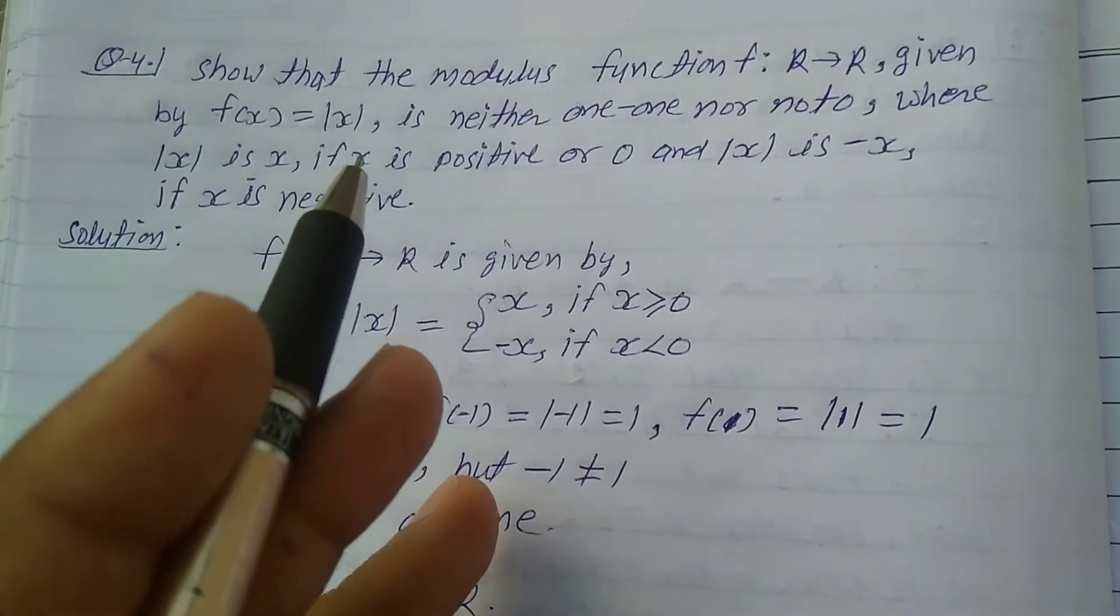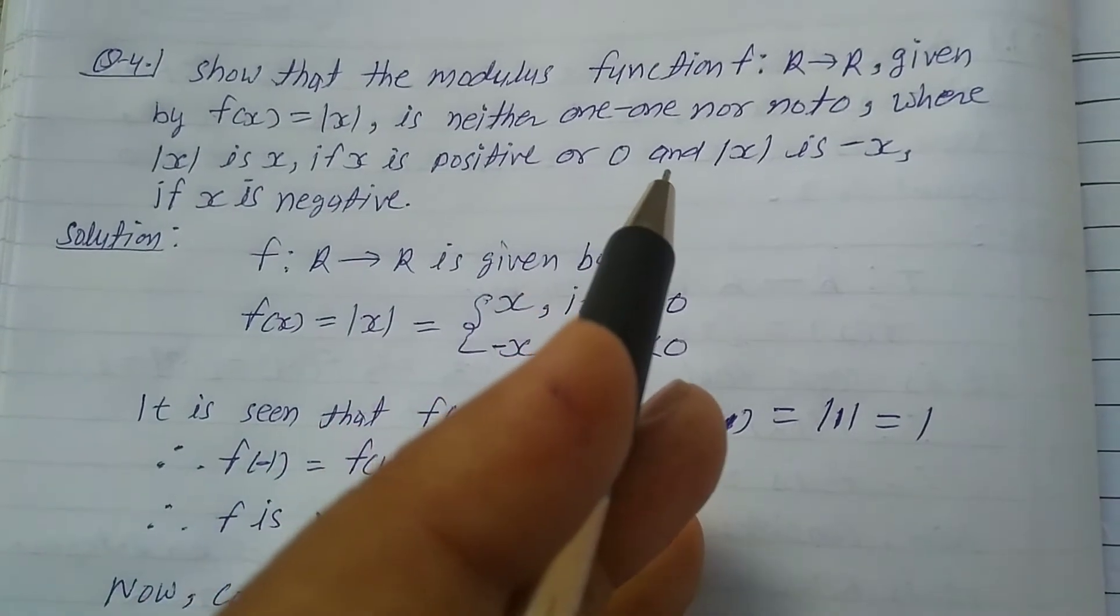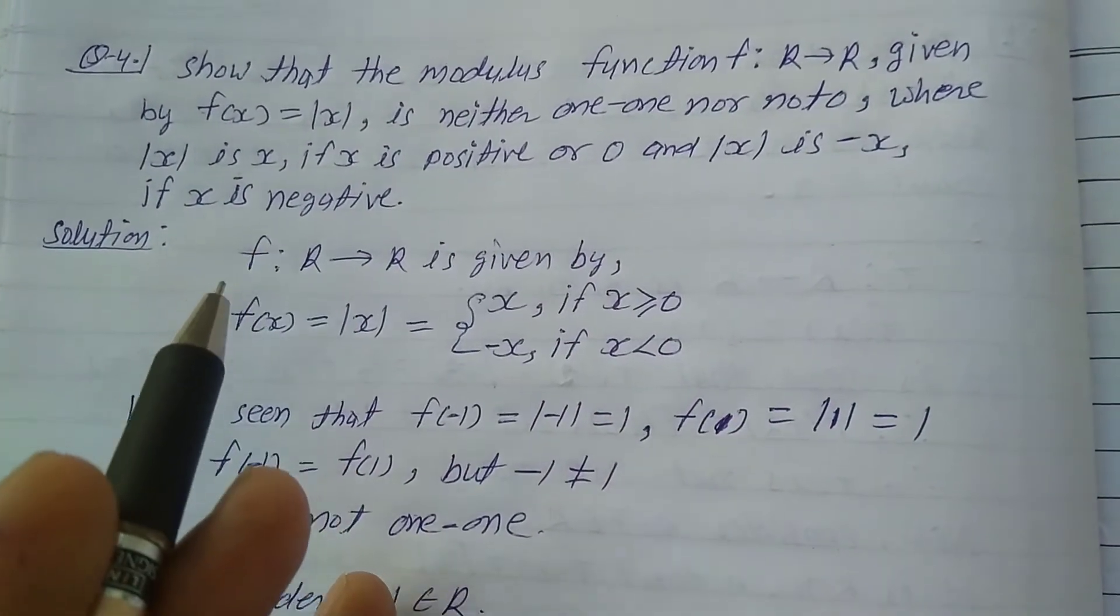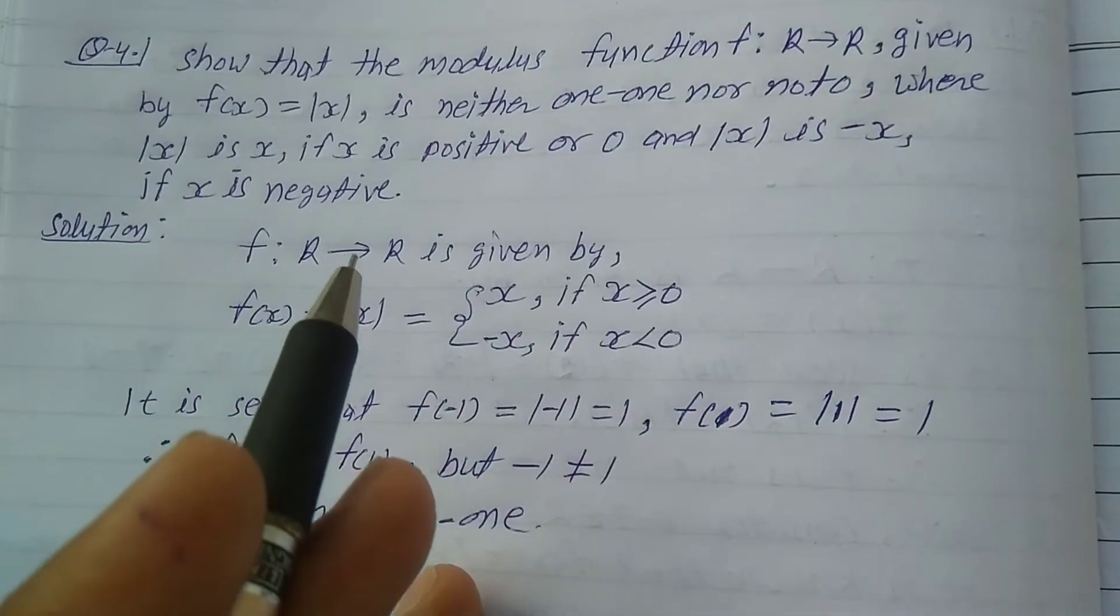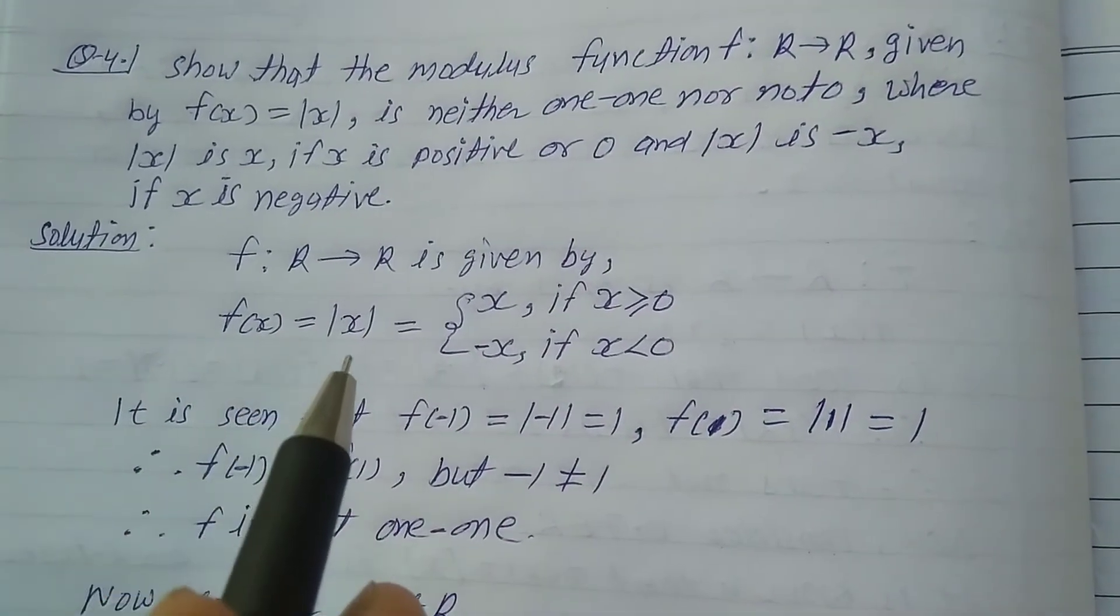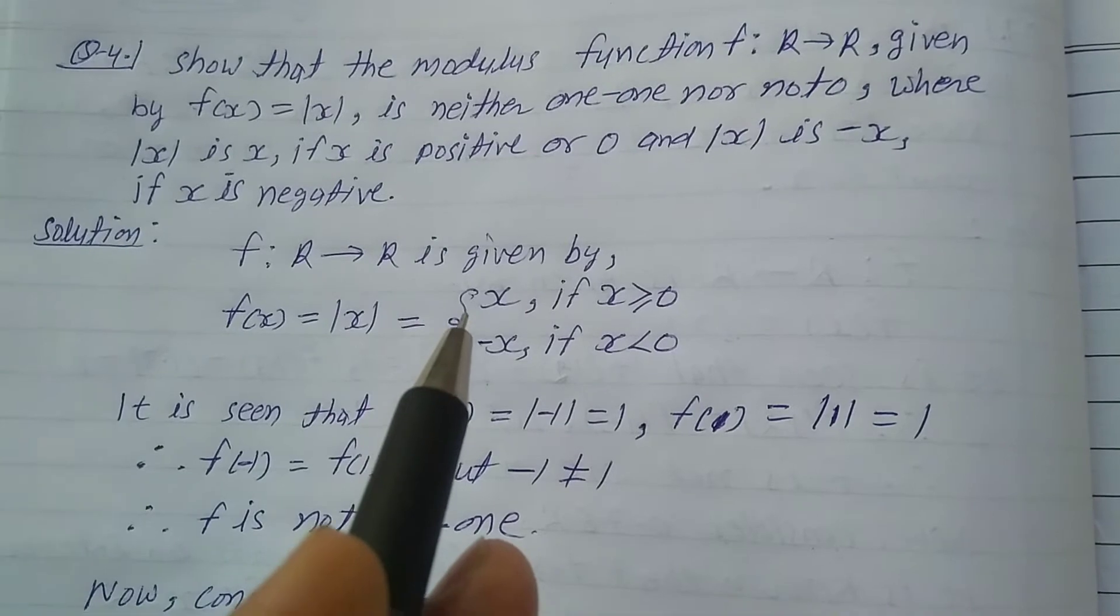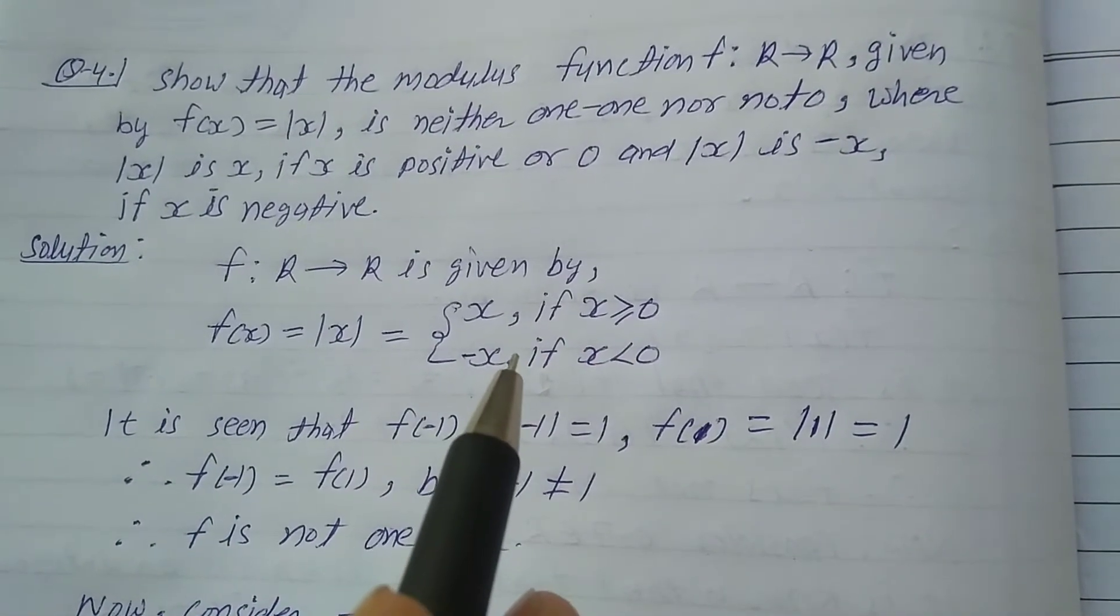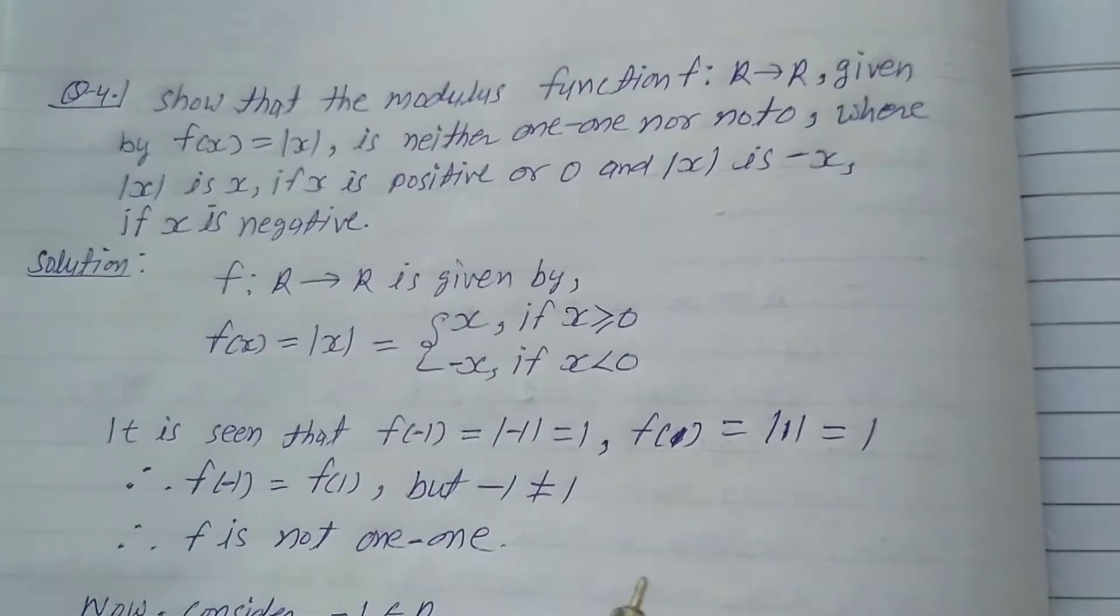Solution: f: R → R is given by f(x) = |x| = {x if x ≥ 0, -x if x < 0}.